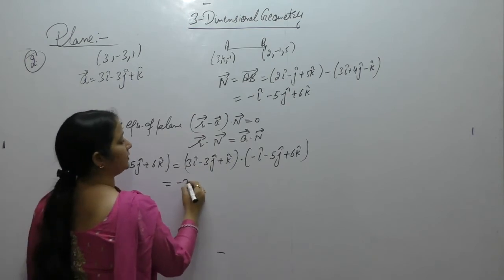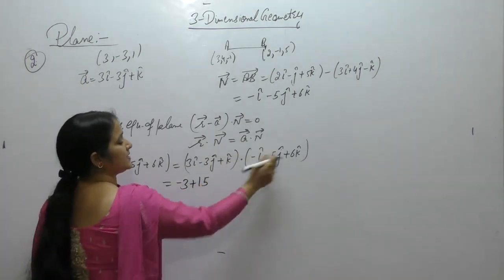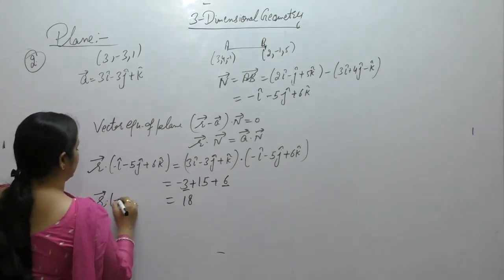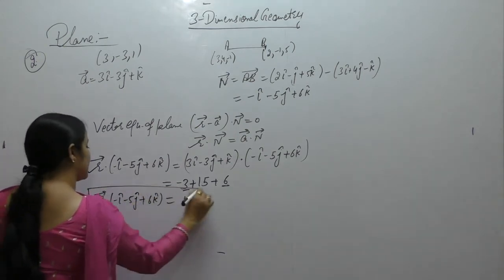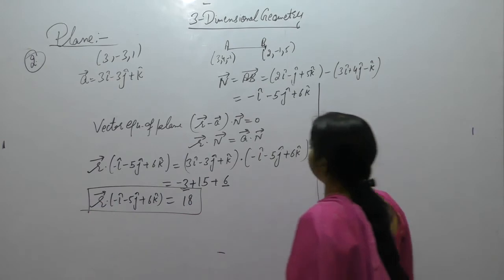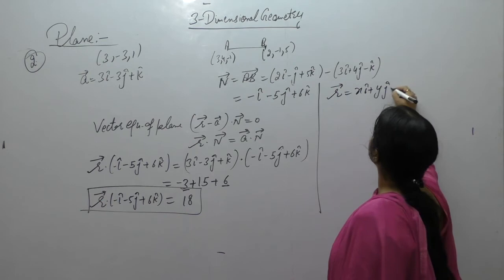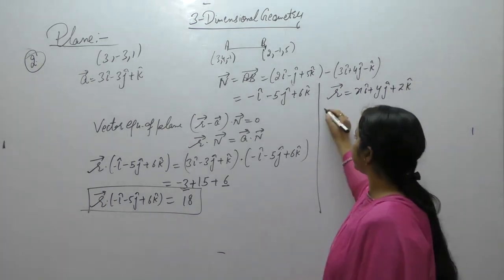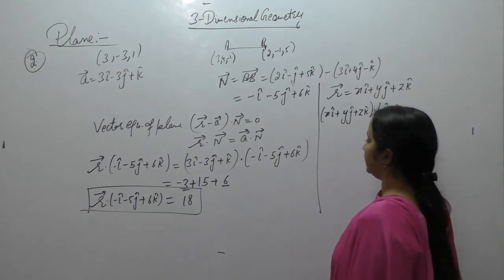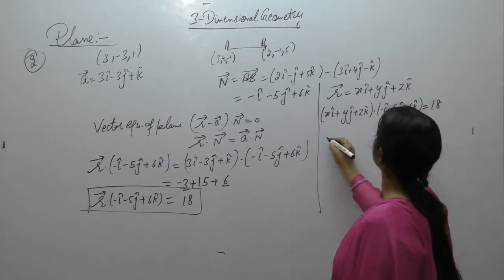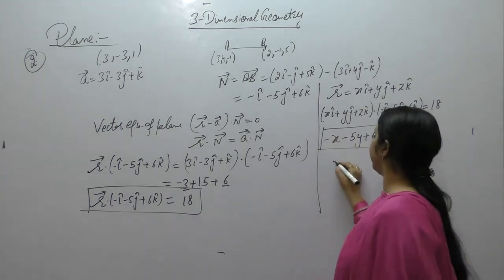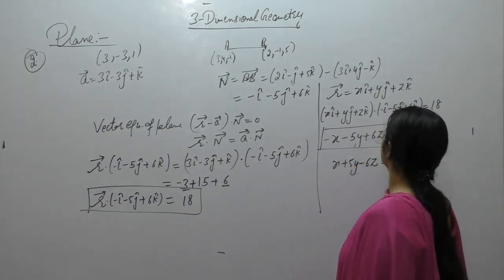Computing the dot product: 3×(−1) + (−3)×(−5) + 1×6 = −3 + 15 + 6 = 18. So the vector equation is R·(−i − 5j + 6k) = 18. For Cartesian form, substituting R = xi + yj + zk: −x − 5y + 6z = 18, or equivalently x + 5y − 6z = −18.